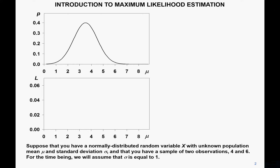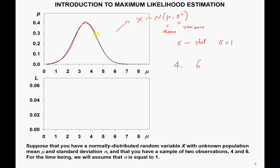Suppose we have a normally distributed random variable X, which is normally distributed with mean mu and variance sigma squared. Now suppose we draw two random samples from this normal distribution — that is 4 and 6. We assume sigma, the standard deviation, equals 1.